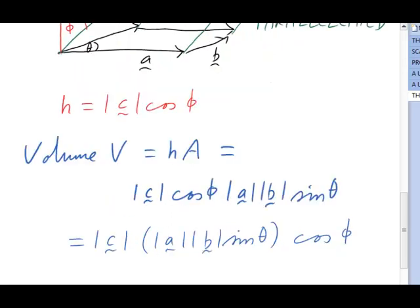I'm going to regroup these quantities in a different order and in a rather suggestive manner. Written this way, we see that the volume is a magnitude of a vector times another scalar quantity that I've put in brackets times the cos of the angle between the vector c and the direction perpendicular to both a and b.